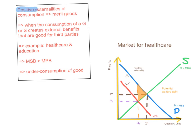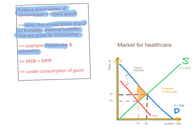Now let's move on to positive externalities of consumption, which is basically the case of merit goods. Positive externalities of consumption occur when the consumption of a good or service creates external benefits that are good for third parties. A very good example is healthcare and education. By consuming healthcare, you are less likely to have infectious diseases that you might spread. By consuming education, you will at some point be a more productive member of society. So these goods, by consuming them, do bring about external benefits to third parties. In the case of positive externalities of consumption, the marginal social benefits are higher than the marginal private benefits, and in this case there's an under-consumption of the good.